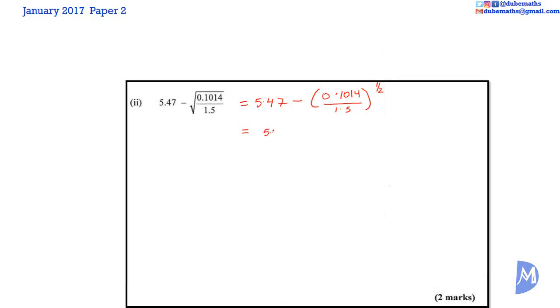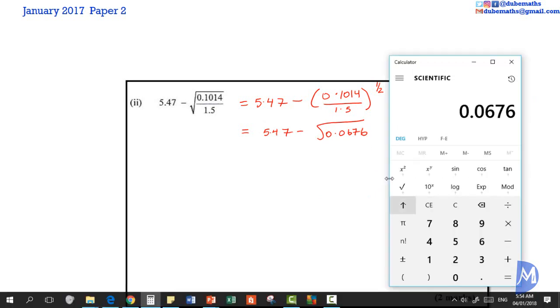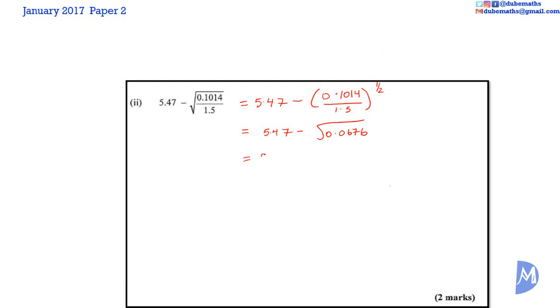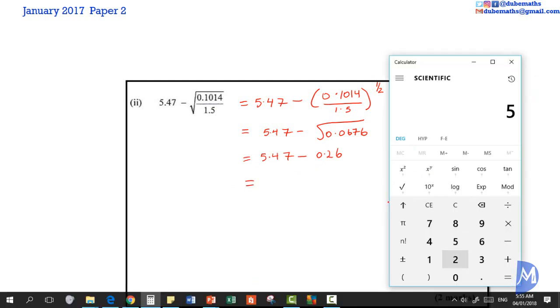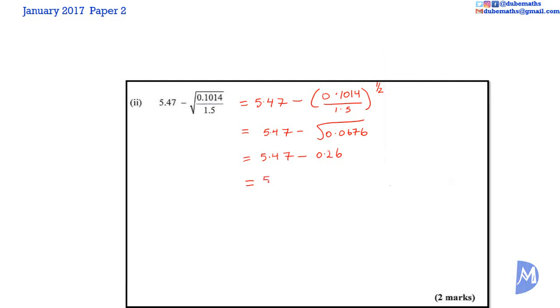The square root of 0.0676 equals 0.26. So 5.47 minus 0.26 equals 5.21. The answer is 5.21.